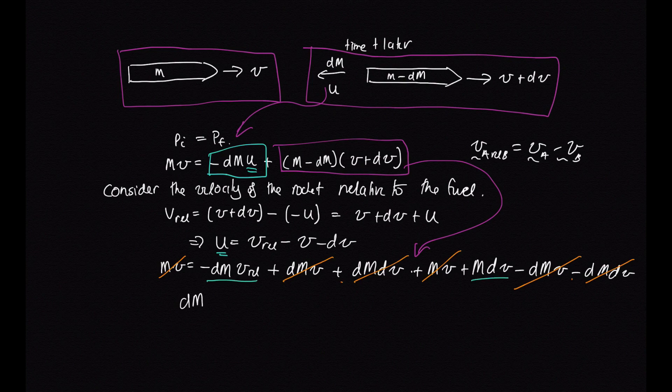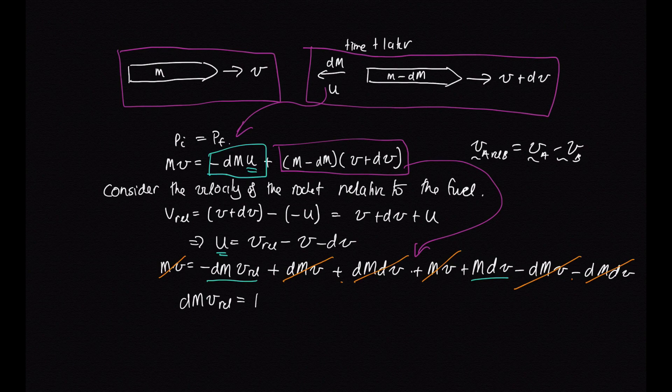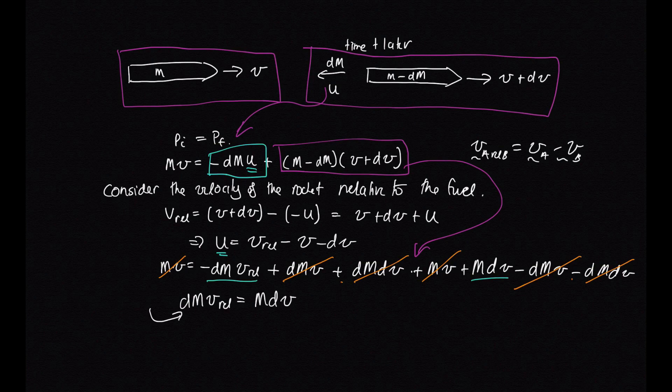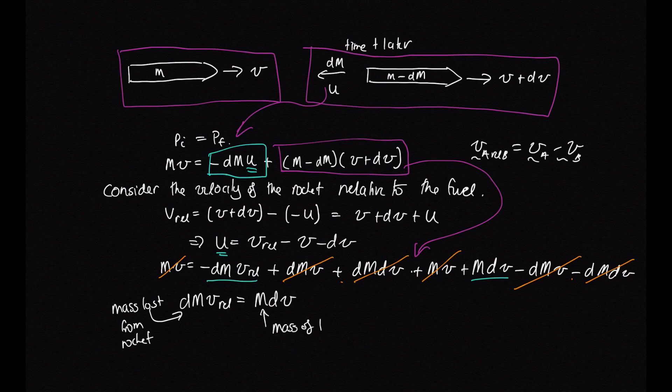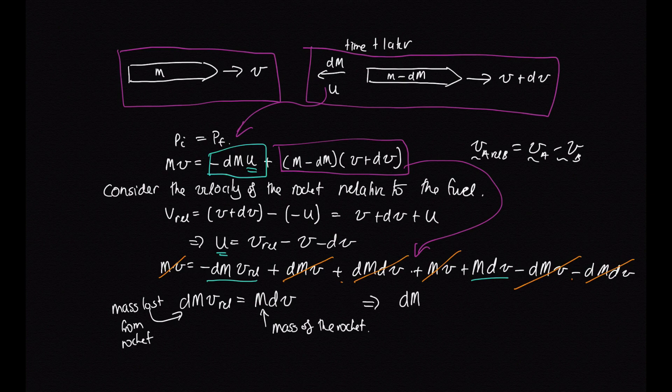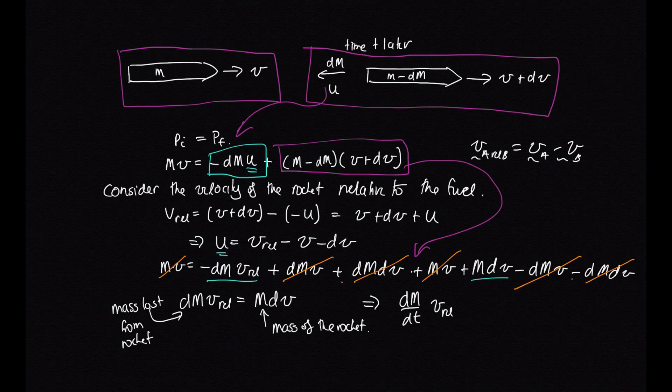So let's rearrange that. And we have dm v_rel is equal to m dv, where this thing here is the mass lost from rocket and this thing here is the mass of the rocket. Now we can actually make this into a nice rocket equation if we divide through by dt. So let's divide through by dt. We've got dm/dt times v_rel is equal to m dv/dt.